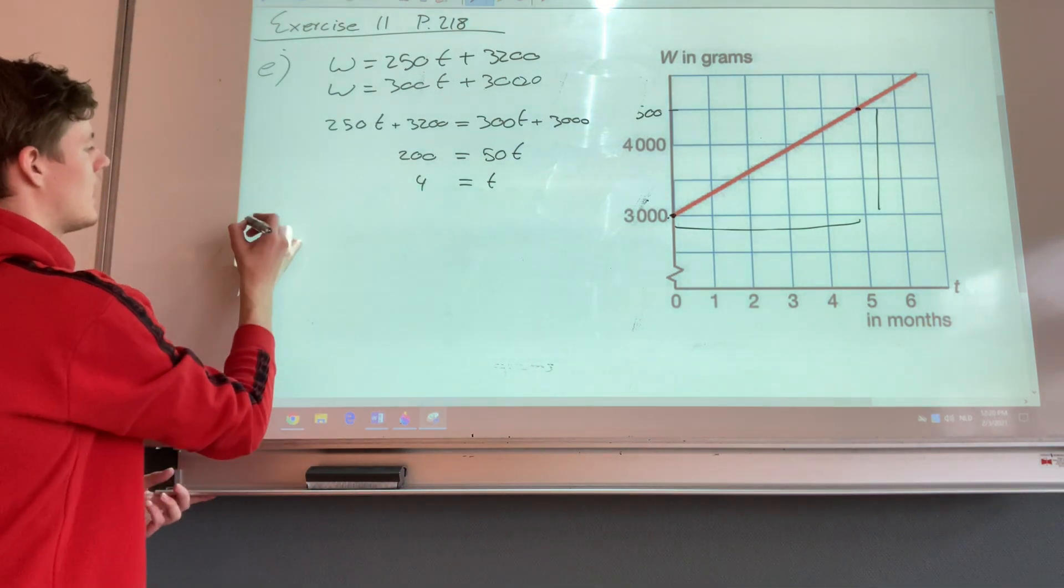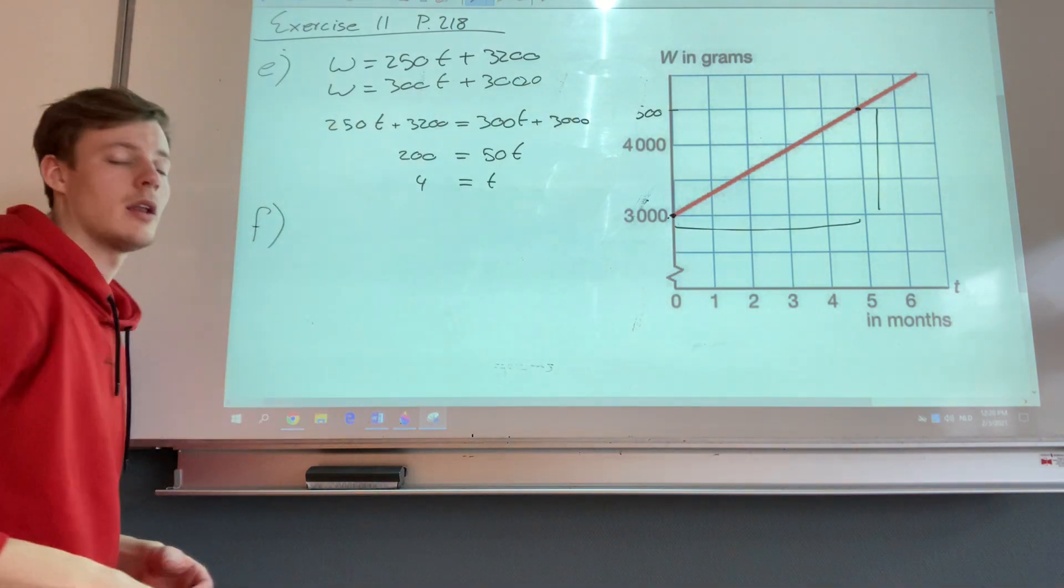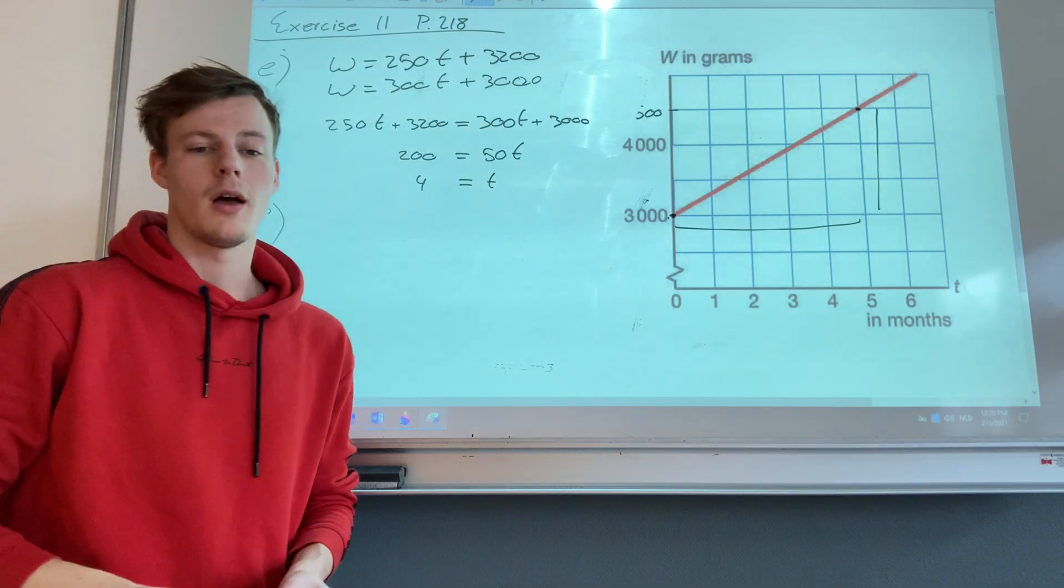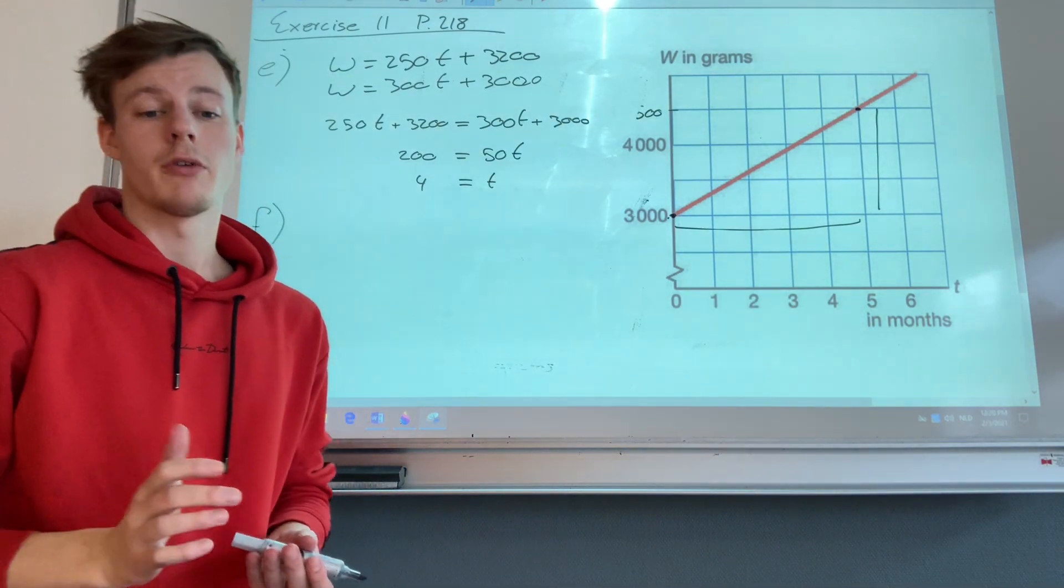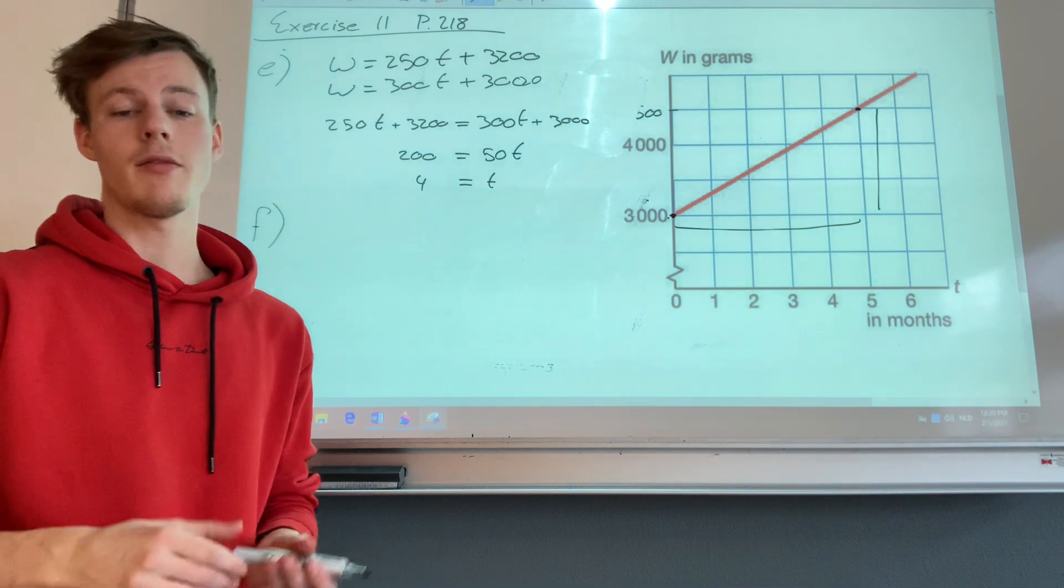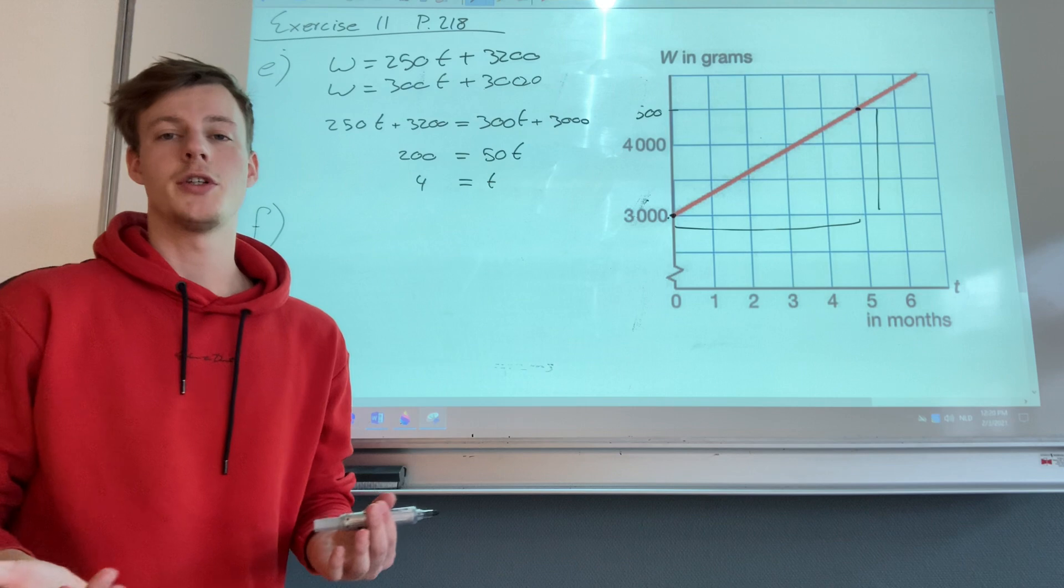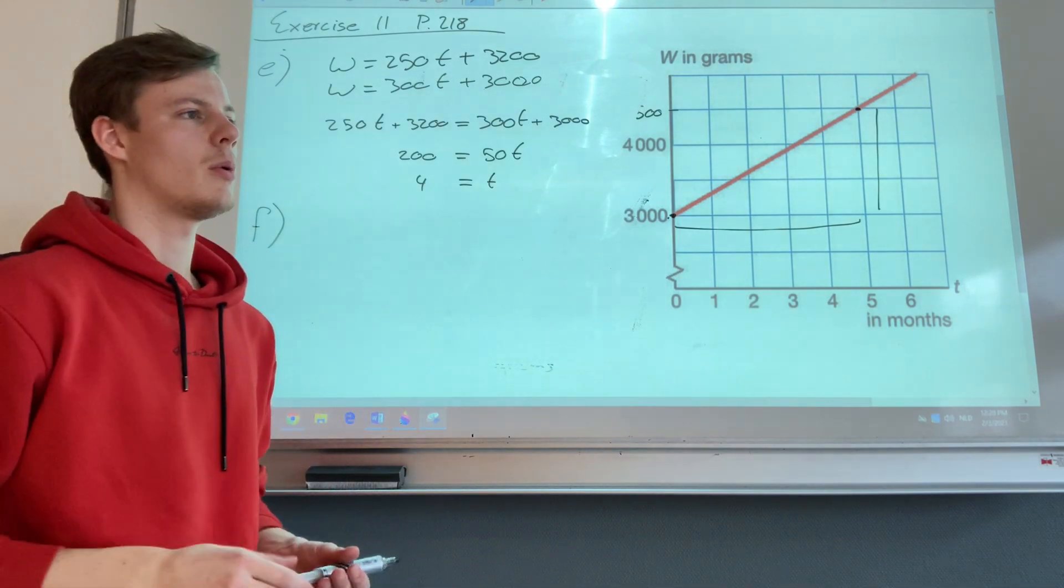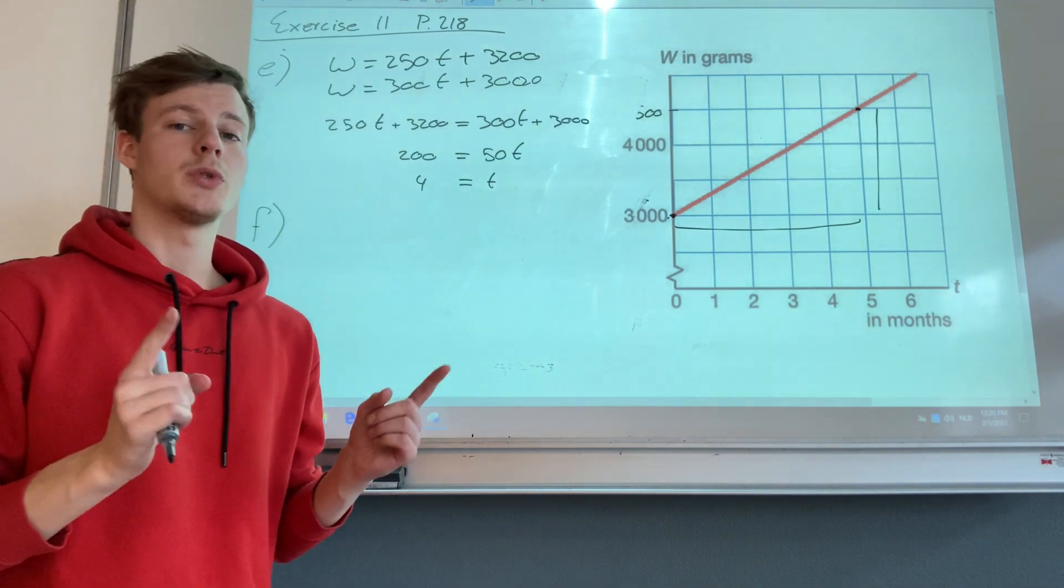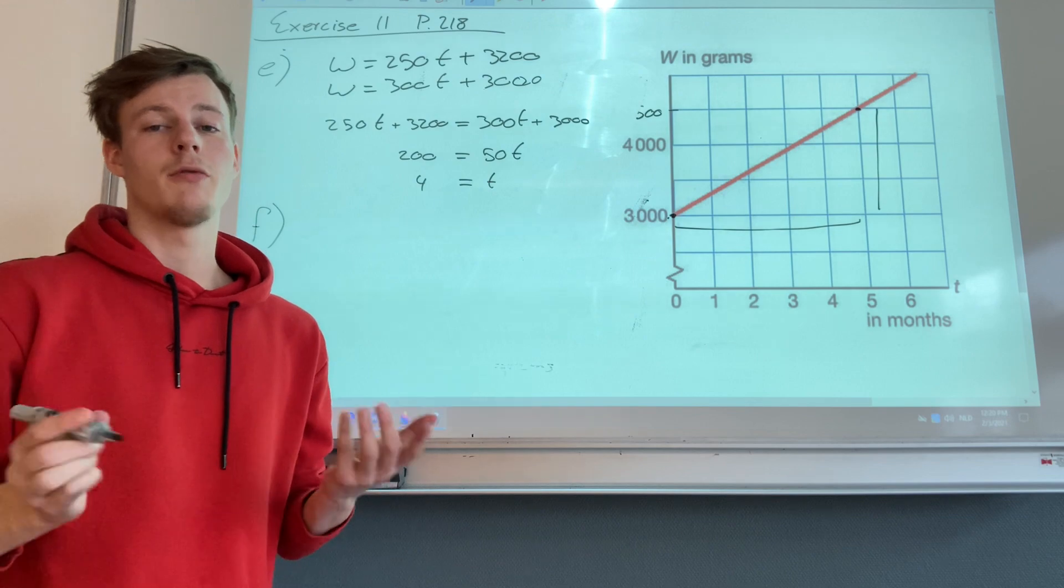Alright. Then the last question, and the most difficult one. So after how many months is Maureen 400 grams heavier than Michael? In this question, you need to be aware of the fact that the difference between the two weights is 400 grams.